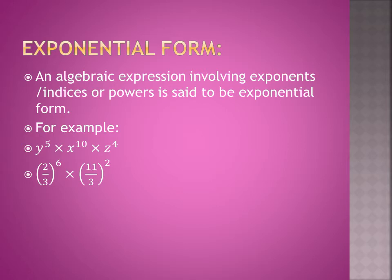In the first example, there are variables: y to the power 5, x to the power 10, and z to the power 4. In the second example, there are rational numbers or fractions in exponential form.